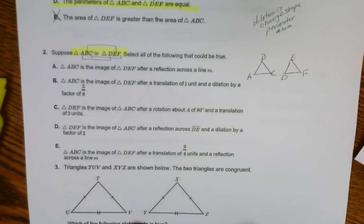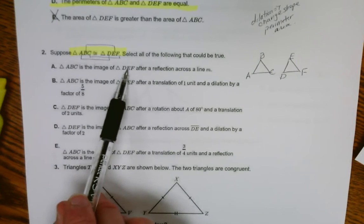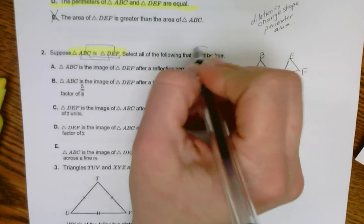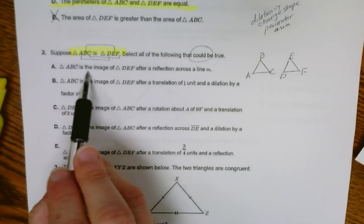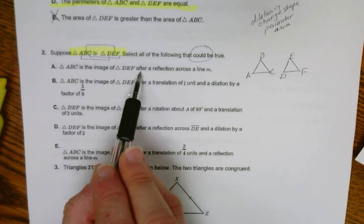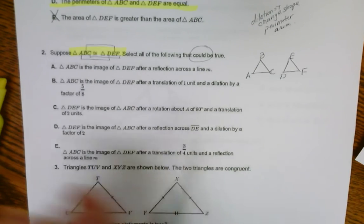ABC is the image of DEF. Oh, and this is could be true, not definitely true. ABC is the image of DEF after a reflection on line M.